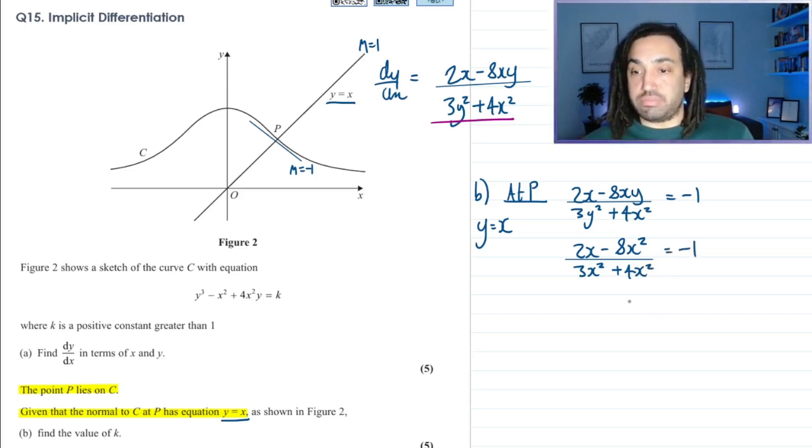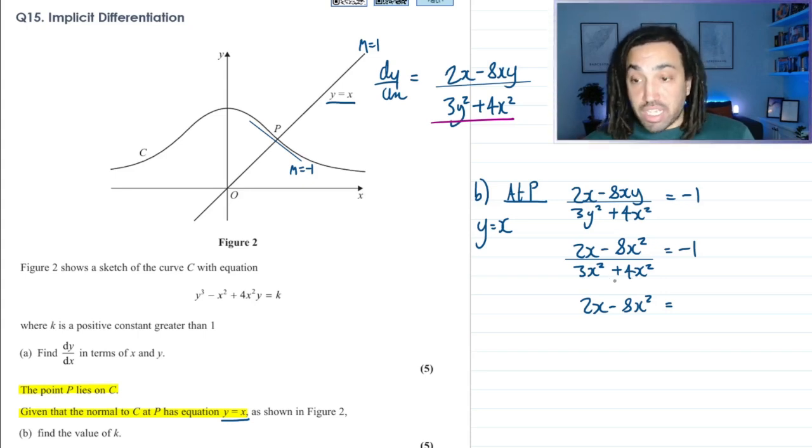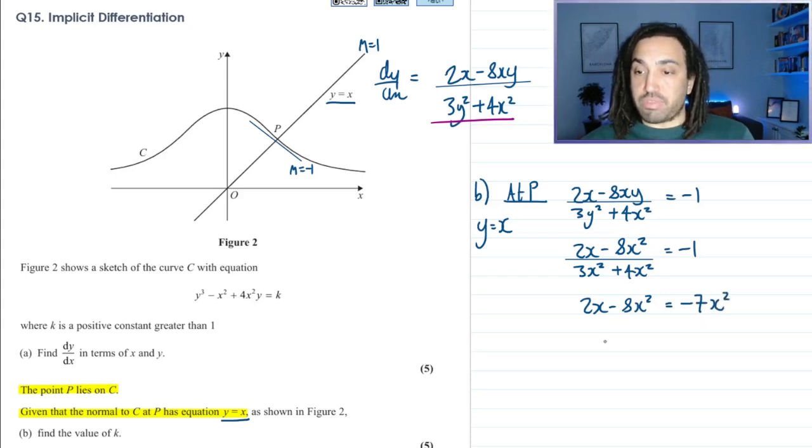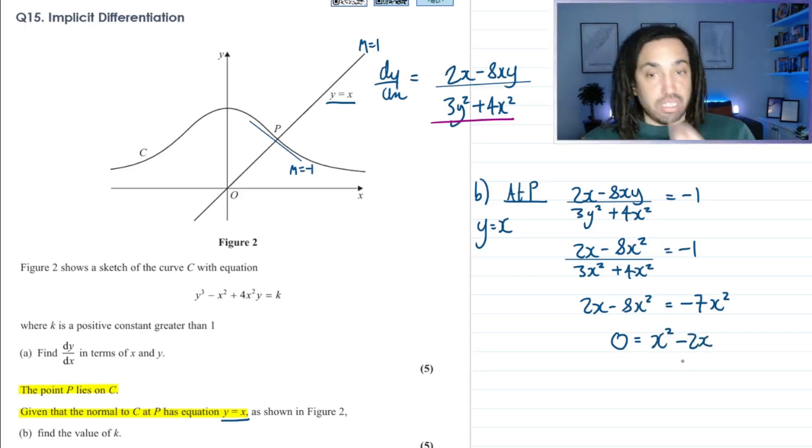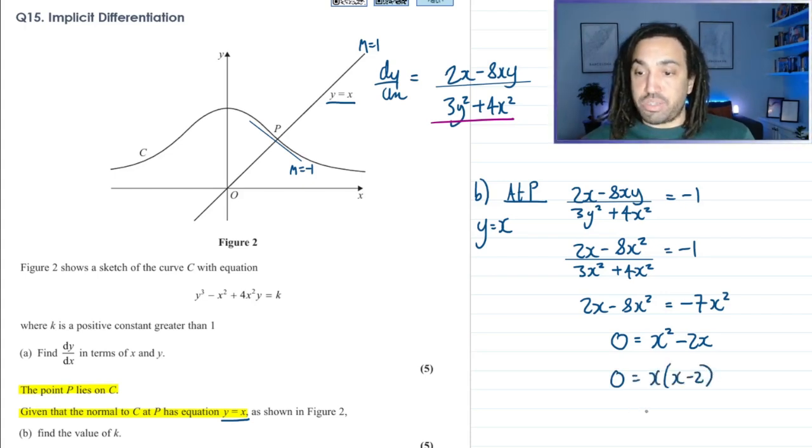Okay, perfect. So we get 2x minus 8x squared, and then this on the bottom is 7x squared. Times it up here becomes minus 7x squared. We could bring all the stuff over to the right-hand side. So add the 8x squared, gives us 1x squared, and minus the 2x gives us minus 2x.